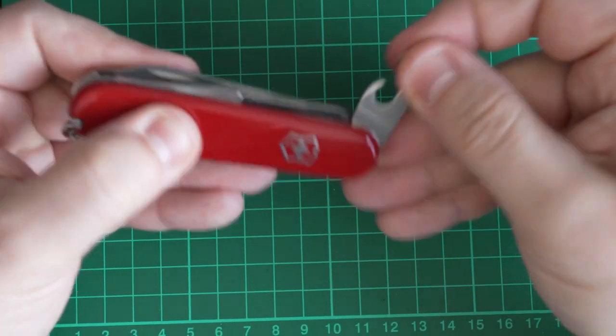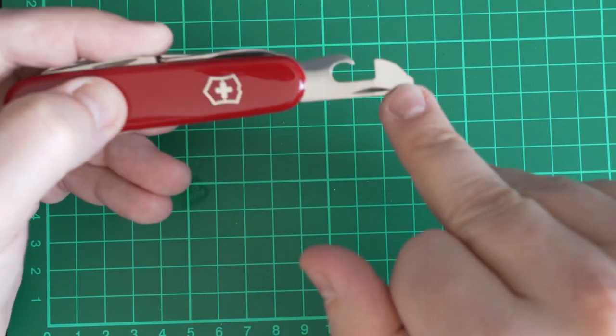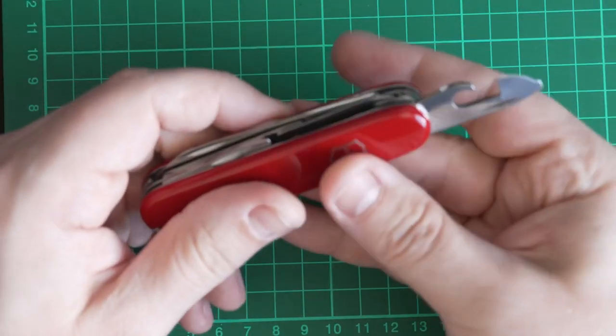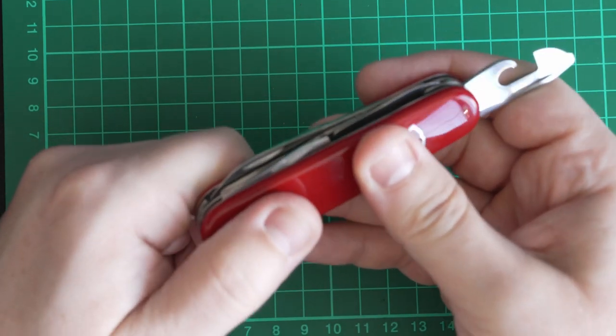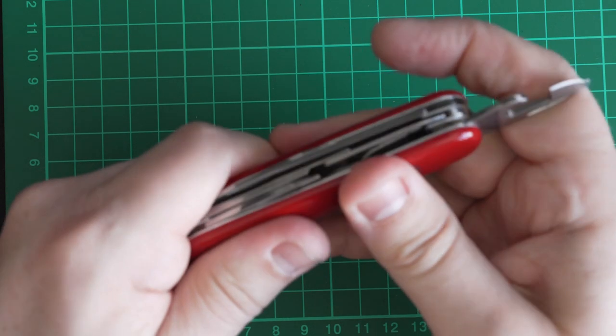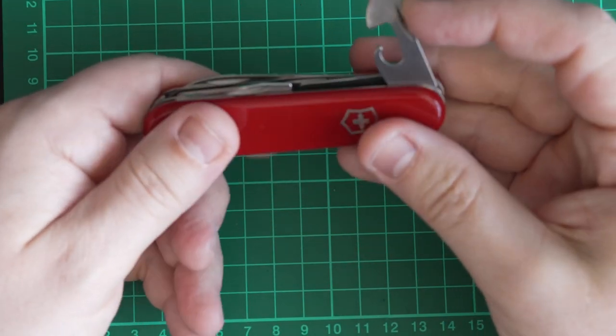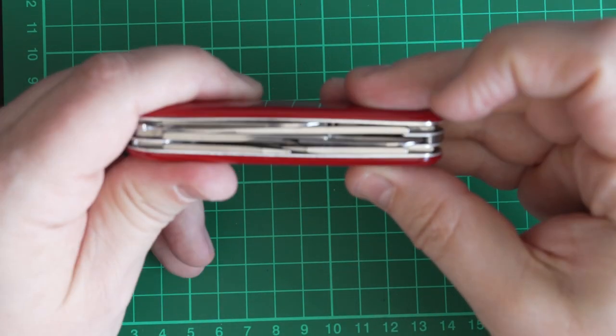And we've got the can opener with the small flathead screwdriver again. I don't open very many cans. Maybe we'll try that if I, I don't know, want a tin of beans or something. We'll see. See where the mood takes me. It's still the morning. Maybe we'll have that for lunch.